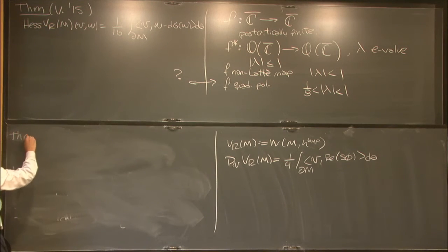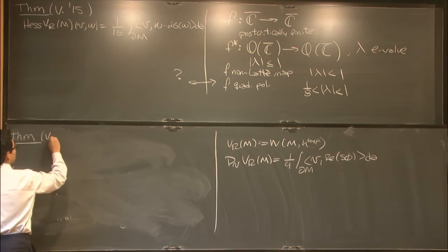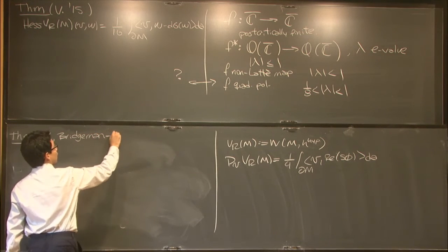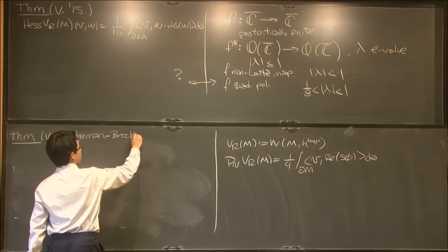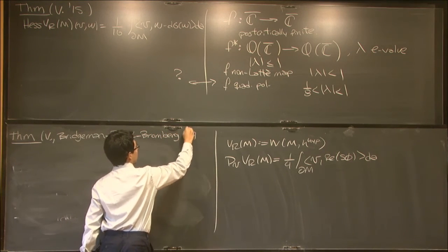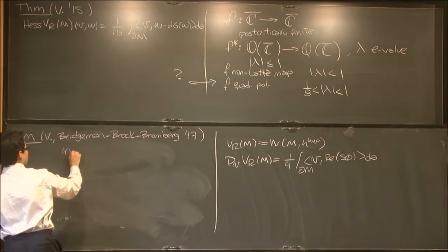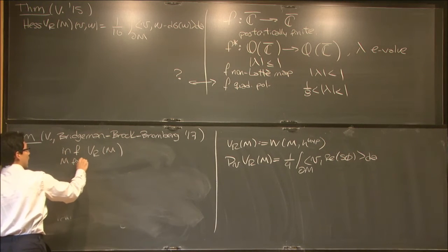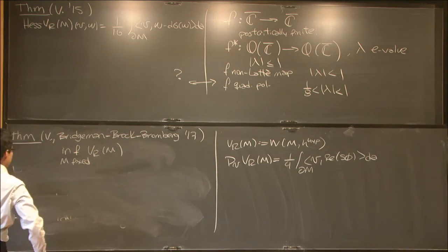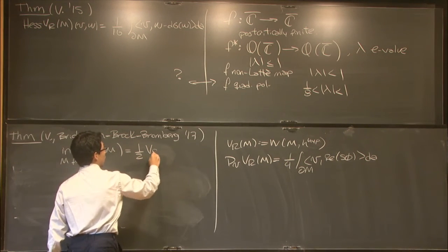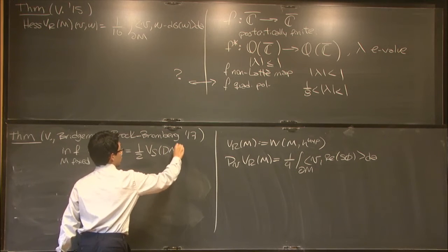Well, now that we have some information that all critical points need to be local minimum, well, we can ask what is happening with the infimum. So this is solved in parallel by Bridgman, Brock and Bromberg last year that says the following. If we now fix M topologically, look at all this space of metrics, the infimum of renormalized volume is precisely one half the simplicial volume of the double.